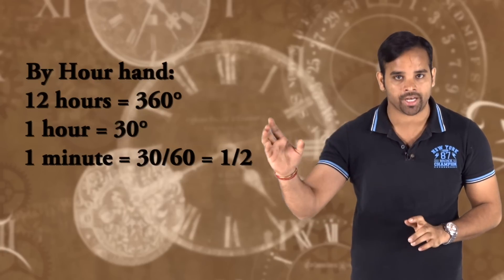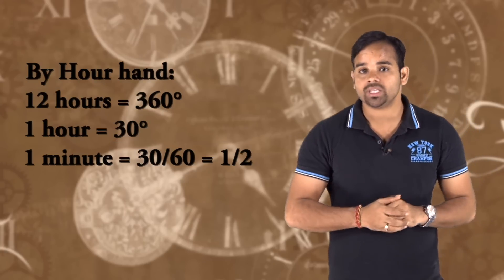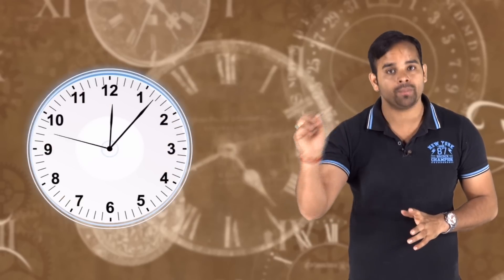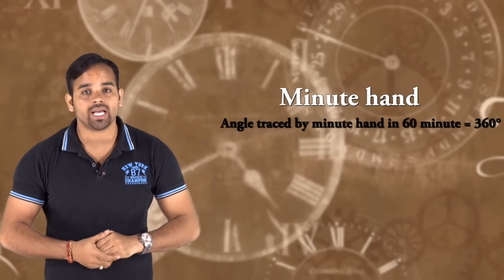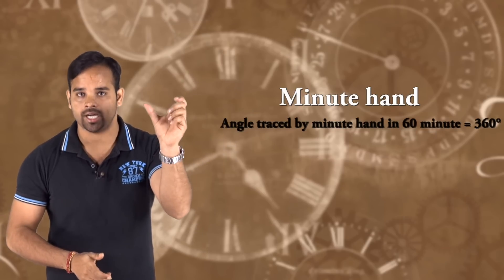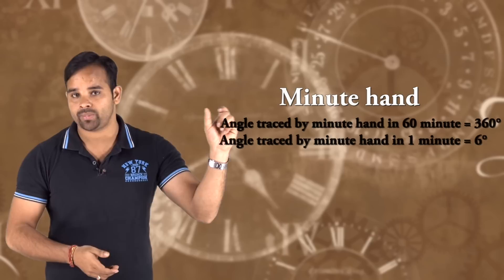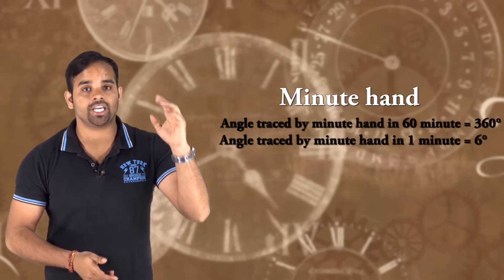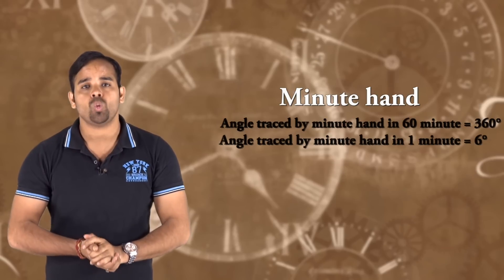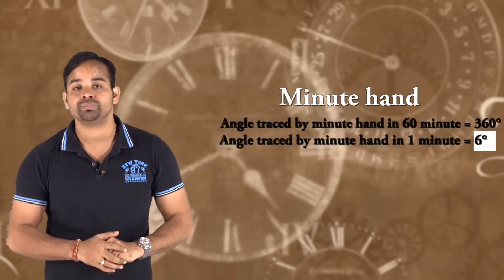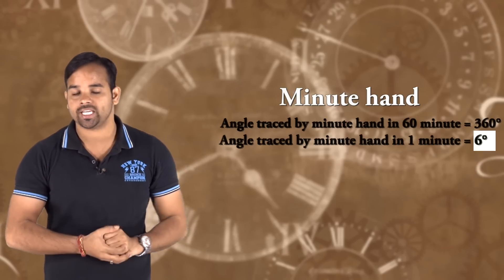So the hour hand makes an angle of 30 degrees in one hour, and 0.5 degrees per minute — that is clear. Now let's talk about the minute hand. The minute hand completes one full rotation in 60 minutes, meaning it covers 360 degrees in 60 minutes. So the minute hand makes an angle of 6 degrees per minute.